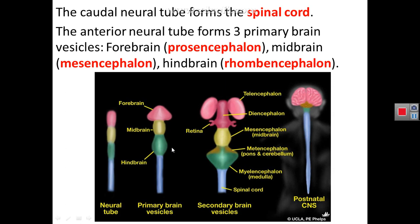These three primary brain vesicles — prosencephalon, mesencephalon, and rhombencephalon — will become five vesicles. The most anterior one, the forebrain, will divide into two, and the most posterior one, the rhombencephalon, will divide into two. The middle one, the mesencephalon, remains as itself and will not change. So there will be five vesicles from three, because the first and last divide into two.